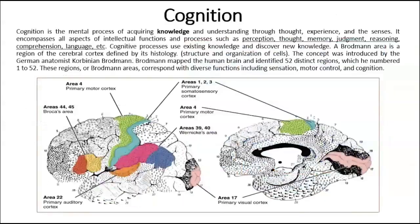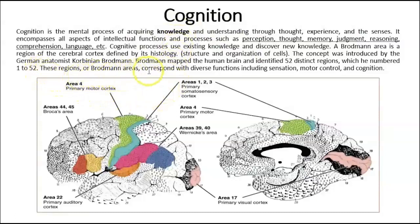Cognition encompasses all the mental processes we use to know something, understand, and acquire knowledge. Around 80% of the brain is used to achieve cognition. When there are problems in the brain, some aspects of cognition will be affected.